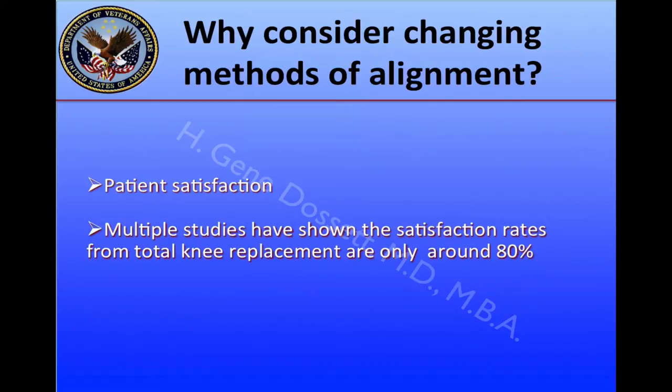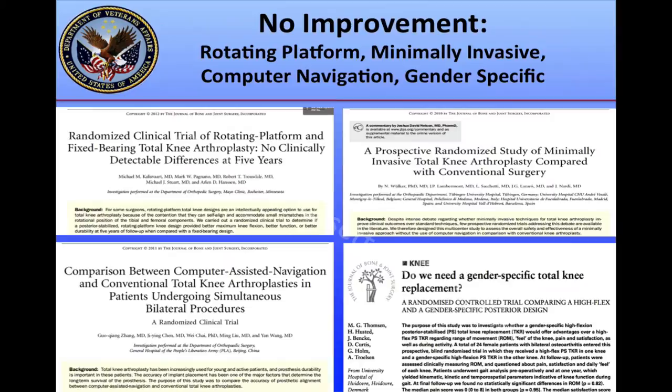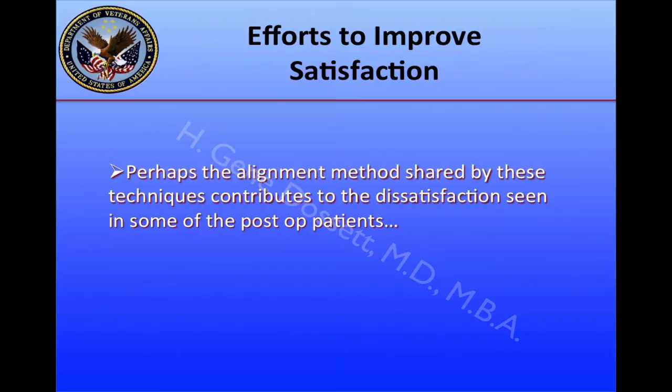The simple answer to why consider changing our method of alignment has to do with patient satisfaction. Multiple studies have shown satisfaction rates from total knee replacement are only around 80% — here are three studies showing anywhere from 80% to 82% satisfaction. Different techniques and implants similarly have not shown improvement. These are randomized controlled trials of four different methods and alignment techniques, and we did not see any improvement in our clinical results. Perhaps the alignment method shared by these techniques contributes to the dissatisfaction seen in some post-op patients.